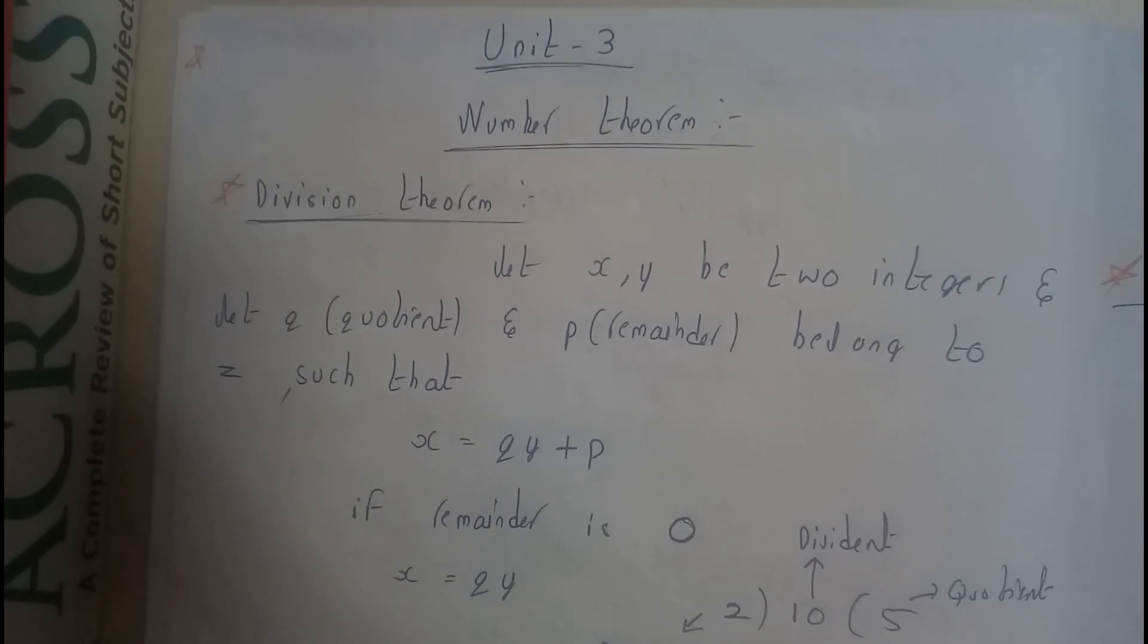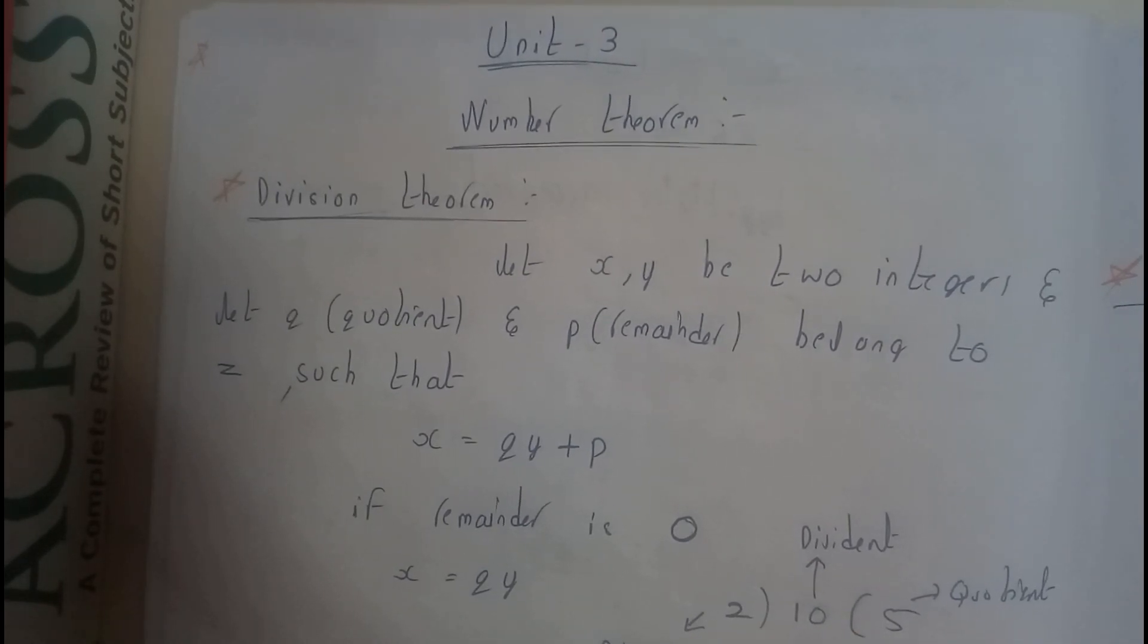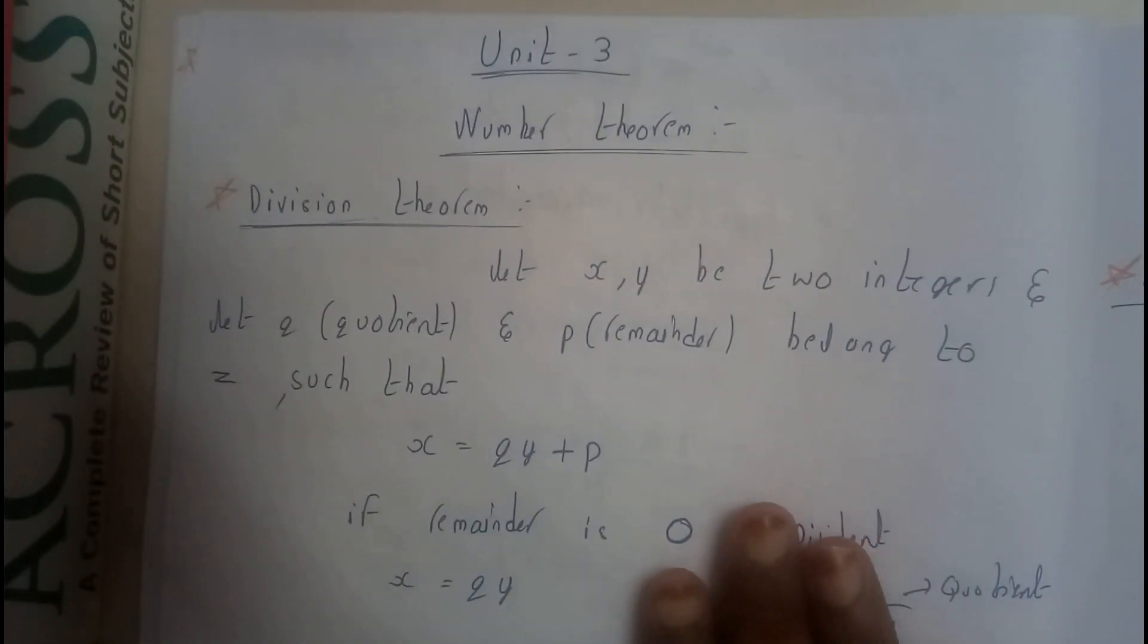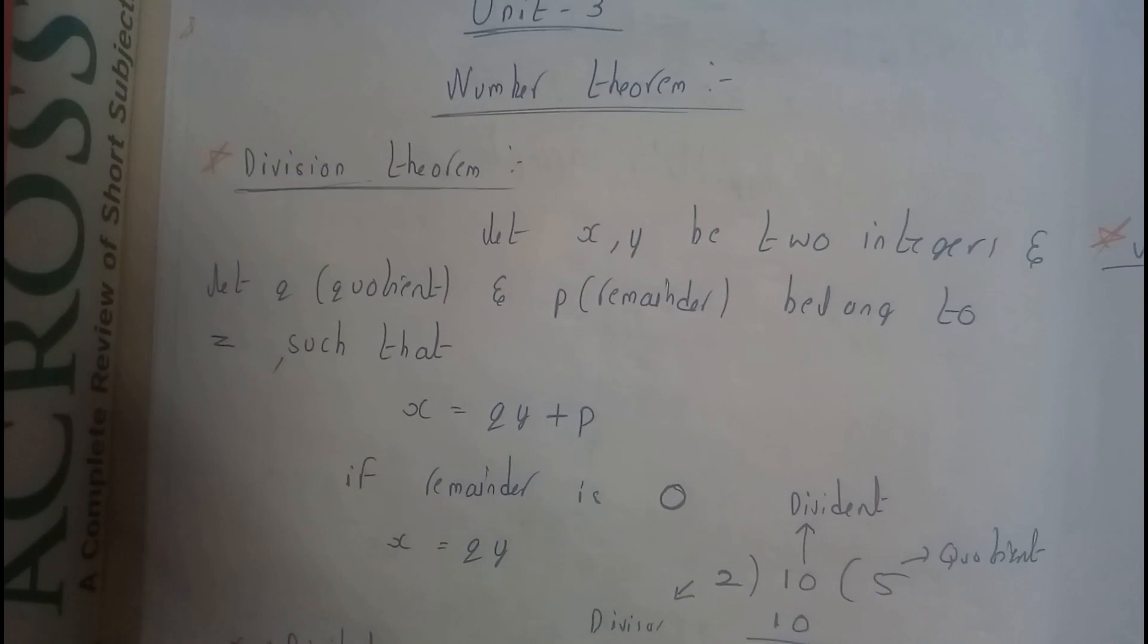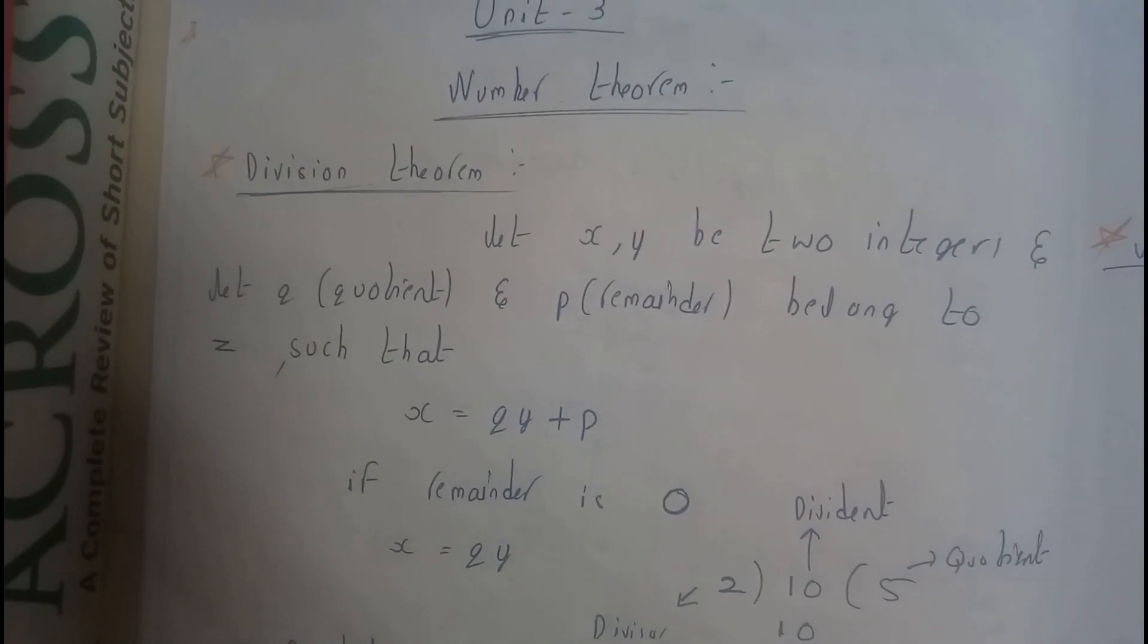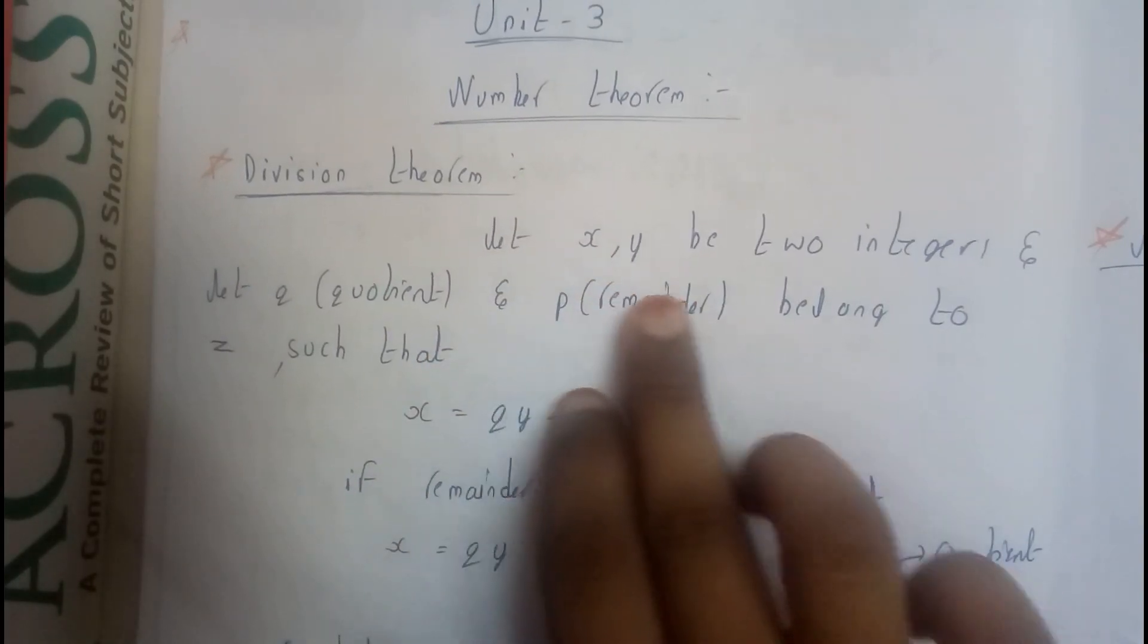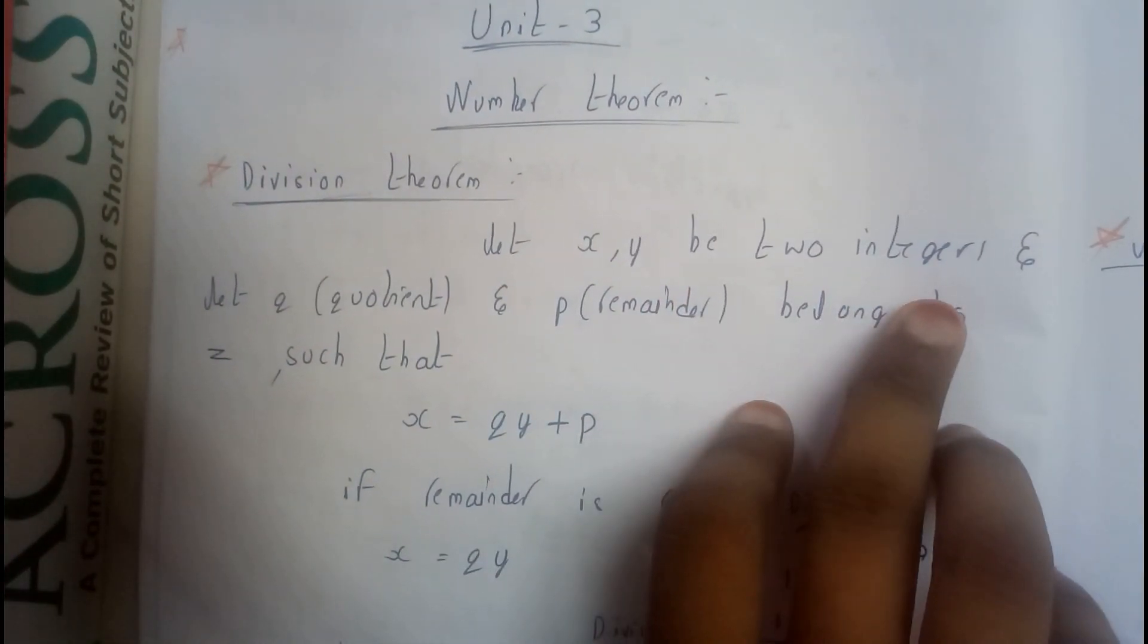Basically every one of us learned this division theorem when we were kids, like in seventh, sixth, fifth class. Even though the same division theorem is repeated here, there is no proof or anything like that in this chapter. So we'll be assuming two integers x and y, and q be the quotient and p be the remainder belonging to Z, which is the set of integers.